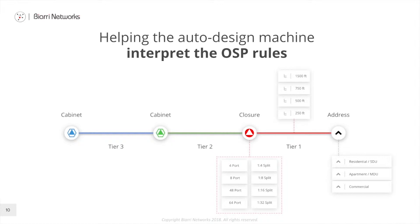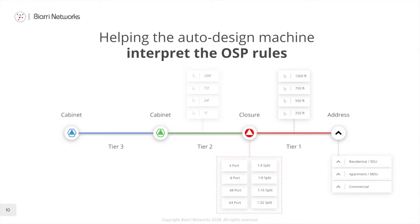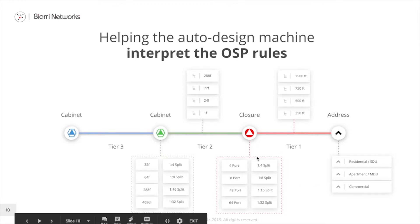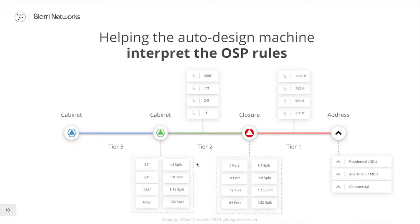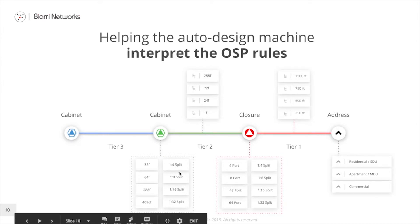Above the Tier 1 tier is the Tier 2 tier. The Tier 2 cabinet is usually the location of the primary splitters in the design, and the Tier 2 cable runs from that cabinet to the closure. We can set the sizes of cables that are valid to run between the cabinet and the closure, and we can also set the number of ports available on the cabinet as well as the split ratio inside that cabinet.